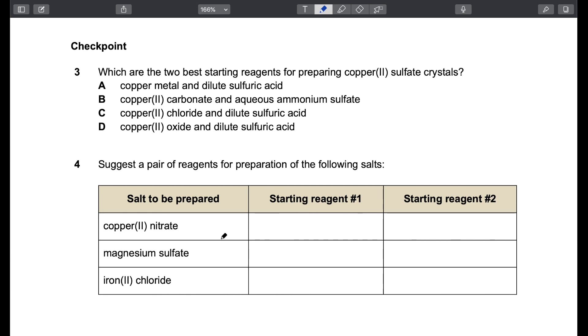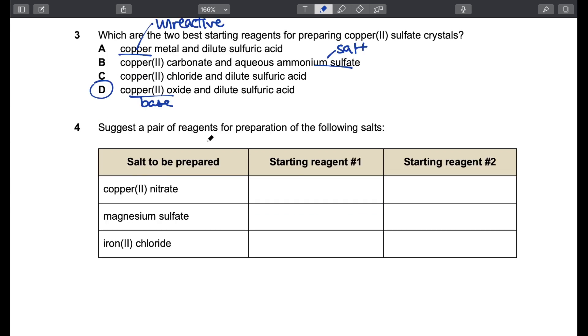So let's try a couple of questions. Pause the video, give it a try, and then we'll go over the answers. Okay, question 3. What are the best starting reagents for preparing copper 2 sulfate crystals? We can't use copper metal because copper is unreactive. Copper 2 carbonate and aqueous ammonium sulfate - ammonium sulfate is a salt. It doesn't react with a carbonate. Copper 2 chloride is a salt. It doesn't react with an acid either. Finally, for D, copper 2 oxide is a base. Acid and base give salt plus water. So D is a possible option.